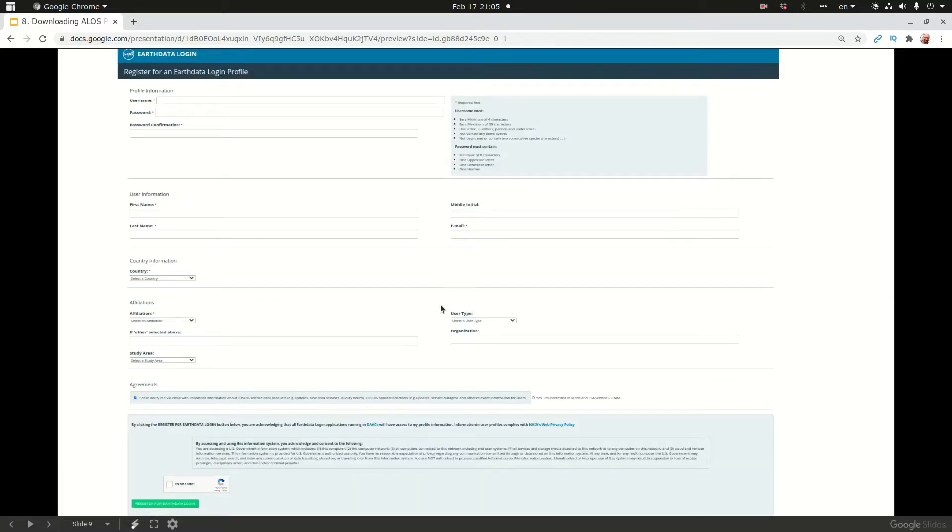Once you click on the link you get this form. You need to pick a username, a password, confirm your password. The password has to abide by the rules listed. You have to fill in your personal data: first name, last name, middle name, email, your country information, your affiliation, and if you choose other you have to explain what other means, your user type and your study area. Finally you click that you are not a robot and then you click accept.